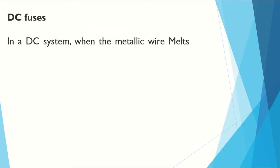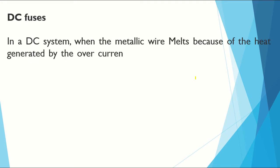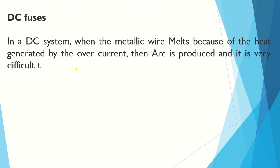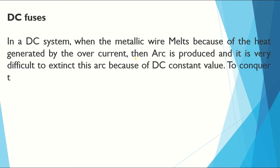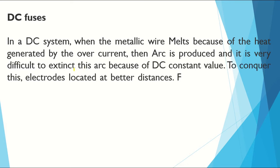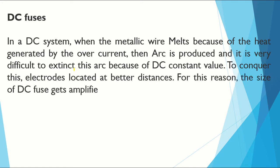DC fuses. In a DC system, when the metallic wire melts because of heat generated by overcurrent, an arc is produced and it is very difficult to extinguish this arc because of DC's constant value. To overcome this, electrodes are located at a safe distance from each other. For this reason, the size of DC fuse is larger or amplified — this is the main reason why DC fuses are much bigger in size than AC fuses.